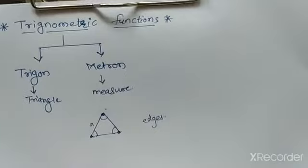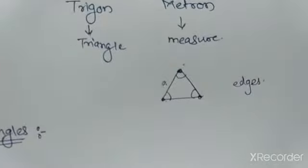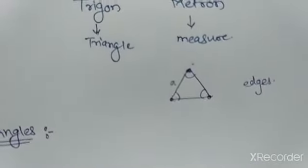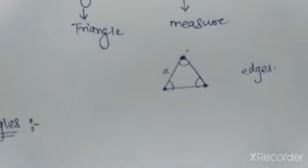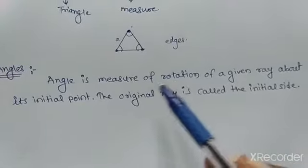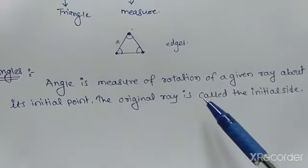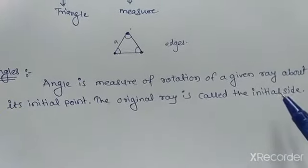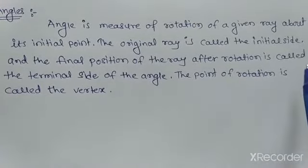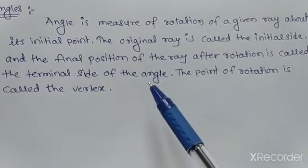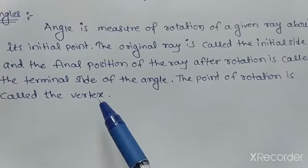What do we know about angles? In previous classes you also know about angles — how we define them. So we will go through this again. An angle is the measure of rotation of a given ray about its initial point. The original ray is called the initial side, the final position of the ray after rotation is called the terminal side, and the point of rotation is called the vertex.